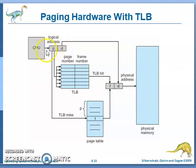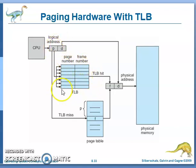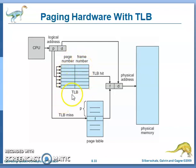The CPU generates the logical address, which can be divided into two parts: page number and displacement. Whenever the CPU generates this logical address, you can find the equivalent frame number. If you previously accessed the same logical address, the equivalent frame number is cached in the TLB. So if you previously used this particular address, you will immediately get the equivalent frame number from the TLB.